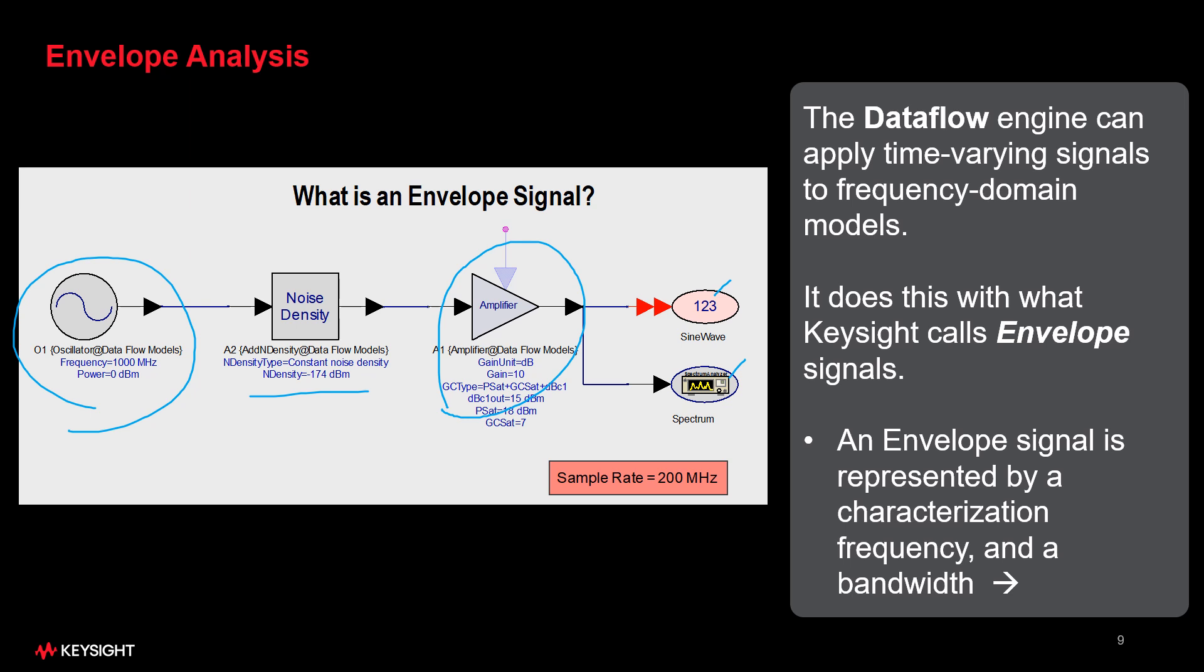An envelope signal is represented by a characterization frequency and a bandwidth. The analysis bandwidth is set by the sample rate, which in this case is 200 MHz. Now, since this is a time domain simulation at discrete time points, that implies a sample rate, and that's what this 200 MHz is referring to.